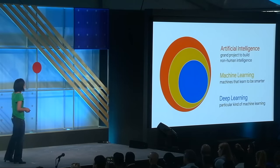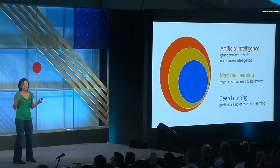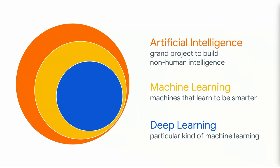Because we apply deep learning to medical information, I wanted to define a few terms that get used quite a bit but are somewhat poorly defined. Artificial intelligence is a pretty broad term and it encompasses that grand project to build non-human intelligence. Machine learning is a particular type of artificial intelligence that teaches machines to be smarter. And deep learning is a particular type of machine learning, which you've probably heard about quite a bit and will hear about quite a bit more.